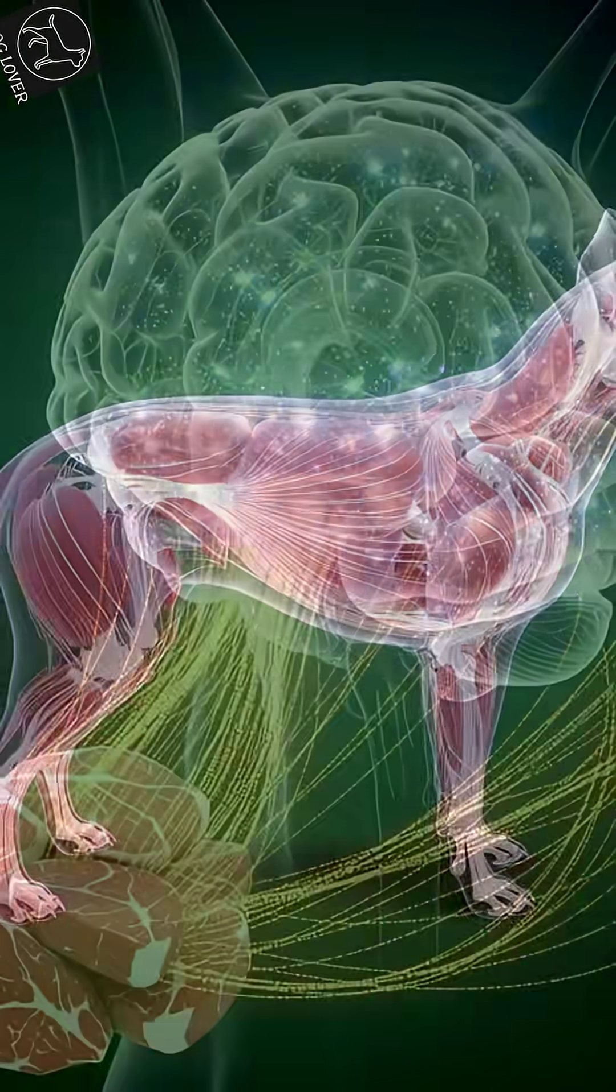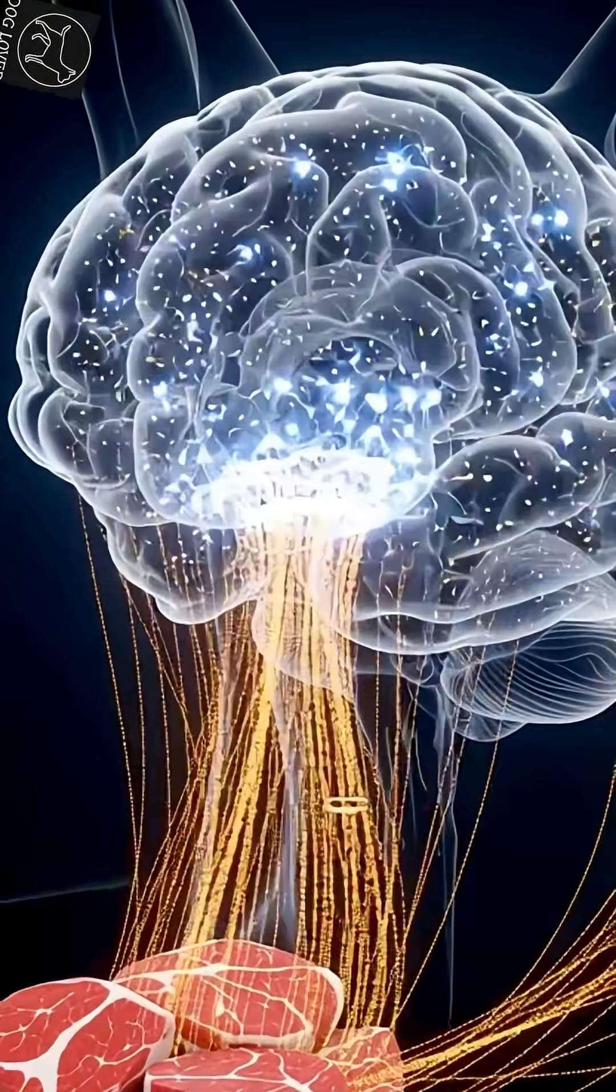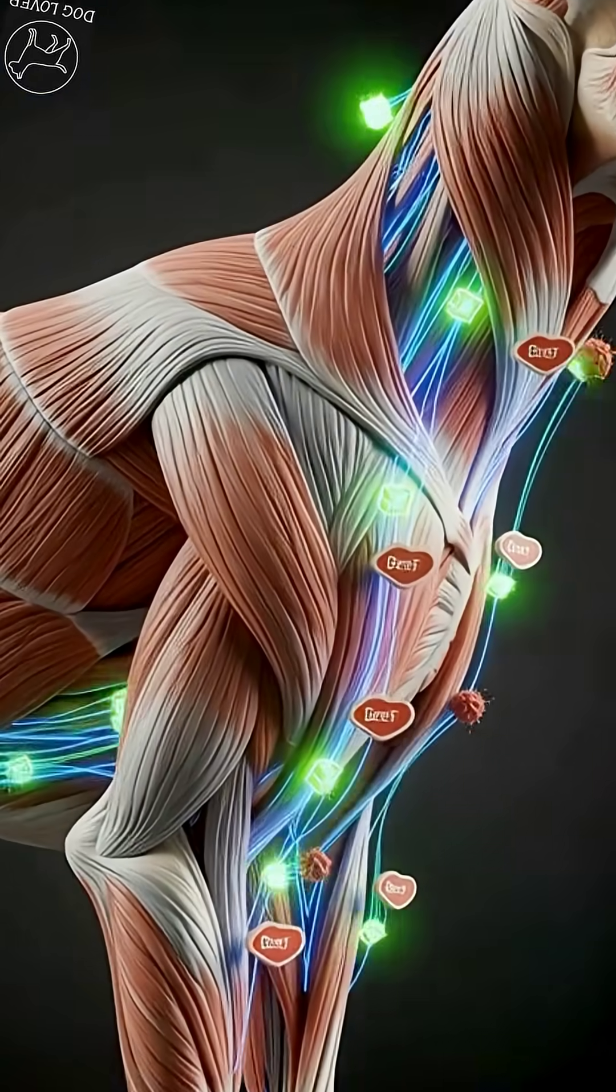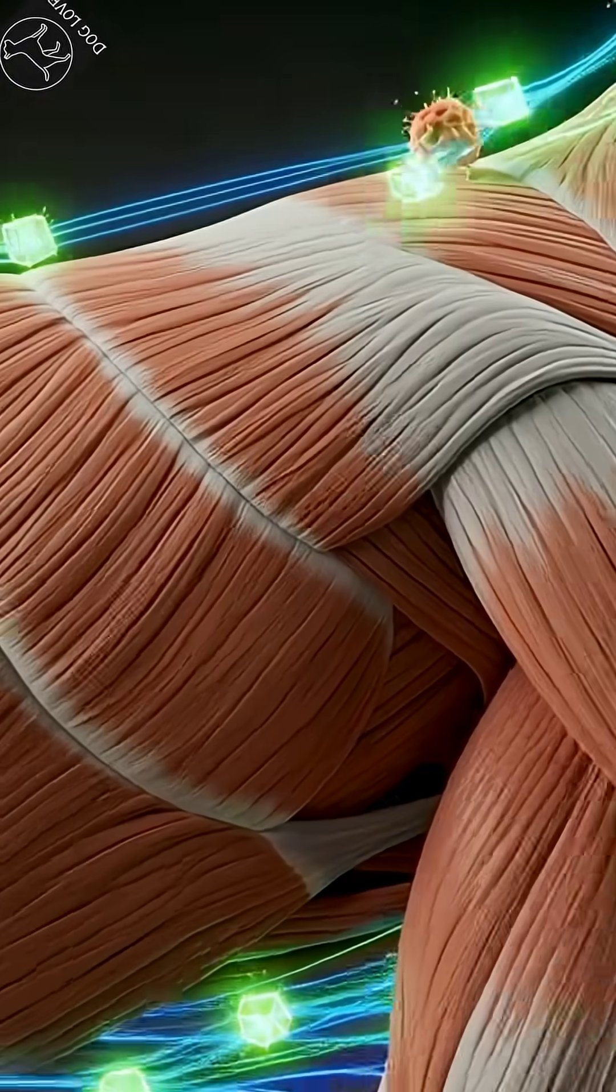Inside the intestines, thousands of tiny villi absorb those nutrients—proteins, vitamins, minerals, and amino acids—and send them directly into the circulatory system, like a biological delivery network.